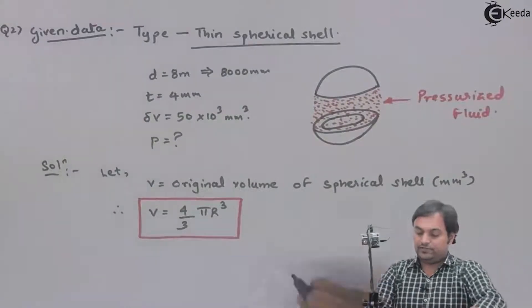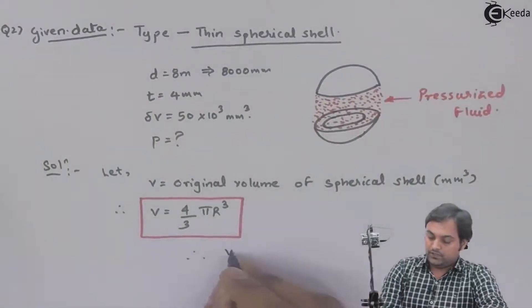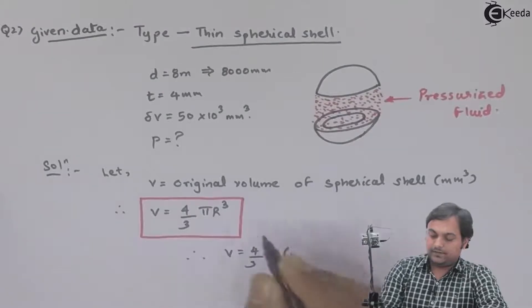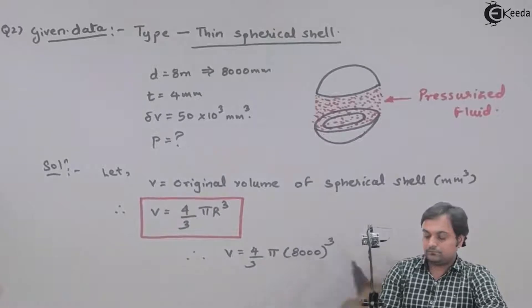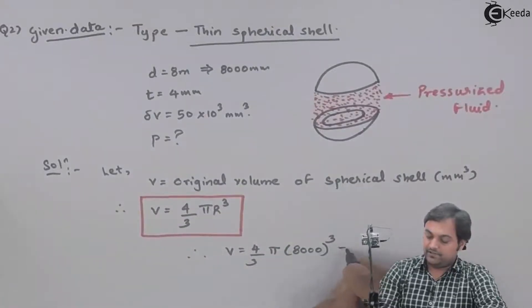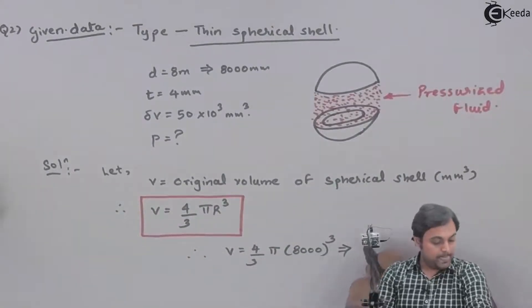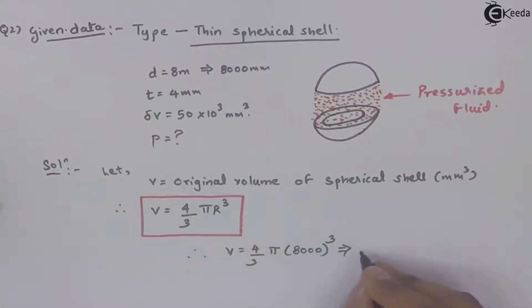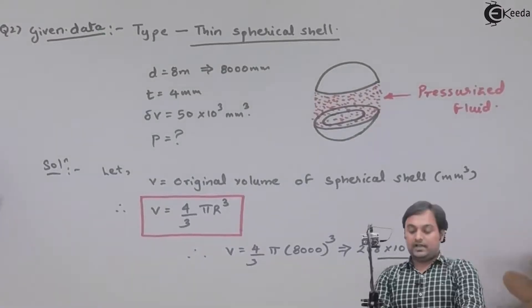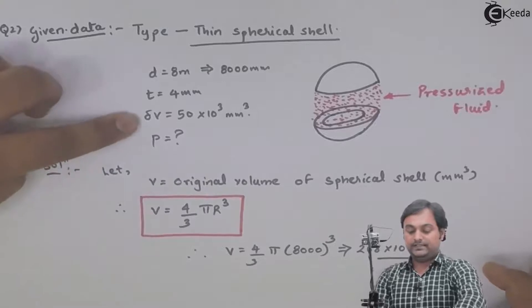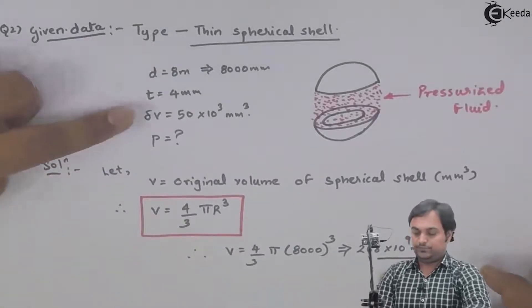Therefore V = (4/3)π × r³, where the radius corresponds to an internal diameter of 8,000 mm. From this we get the original volume as 268×10⁹ mm³. This is our original volume, and 50×10³ mm³ is our change in volume.